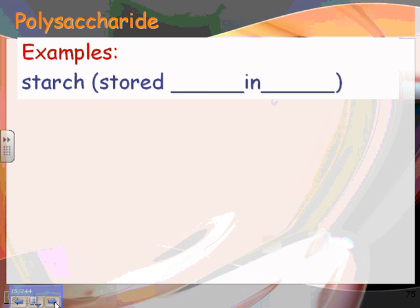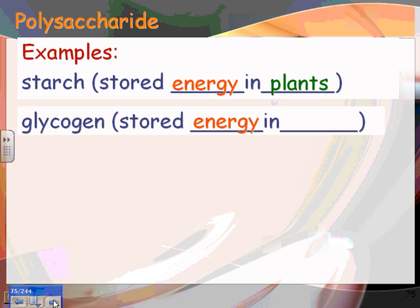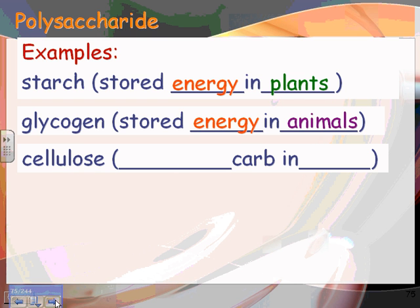The first one is starch — it's stored energy in plants. You eat starch all the time whenever you're eating a bagel or potatoes. Glycogen is stored energy in animals. Starch and glycogen are very similar in that they're both stored energy: starch is in plants, glycogen is in animals.